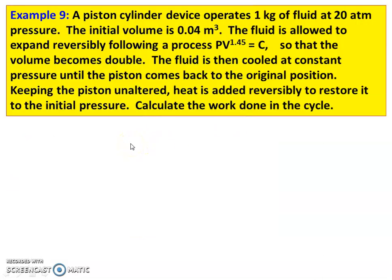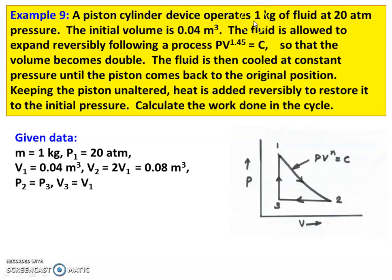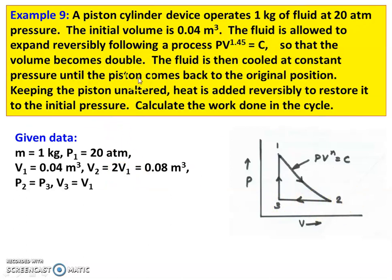Next problem, example number 9. A piston cylinder device operates with 1 kg of fluid at 20 atmosphere. The initial volume is 0.04 m³. The fluid expands reversibly following PV to the power 1.45 equal to constant — process 1 to 2 polytropic — such that the volume becomes double, so V2 equal to 2 times V1 equal to 0.08 m³. The fluid is then cooled at constant pressure — process 2 to 3 — until the piston returns to the original position, so V3 equal to V1.